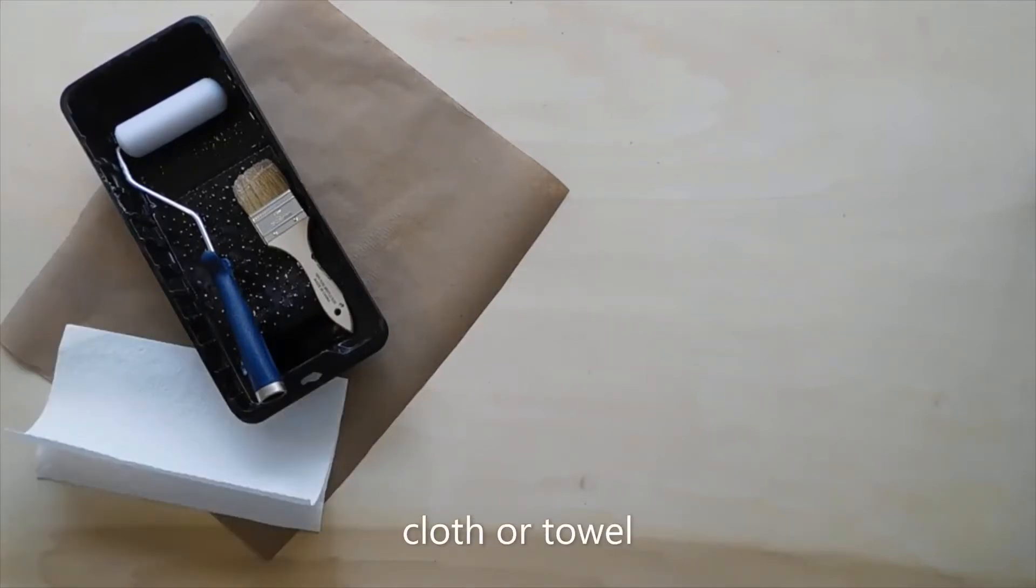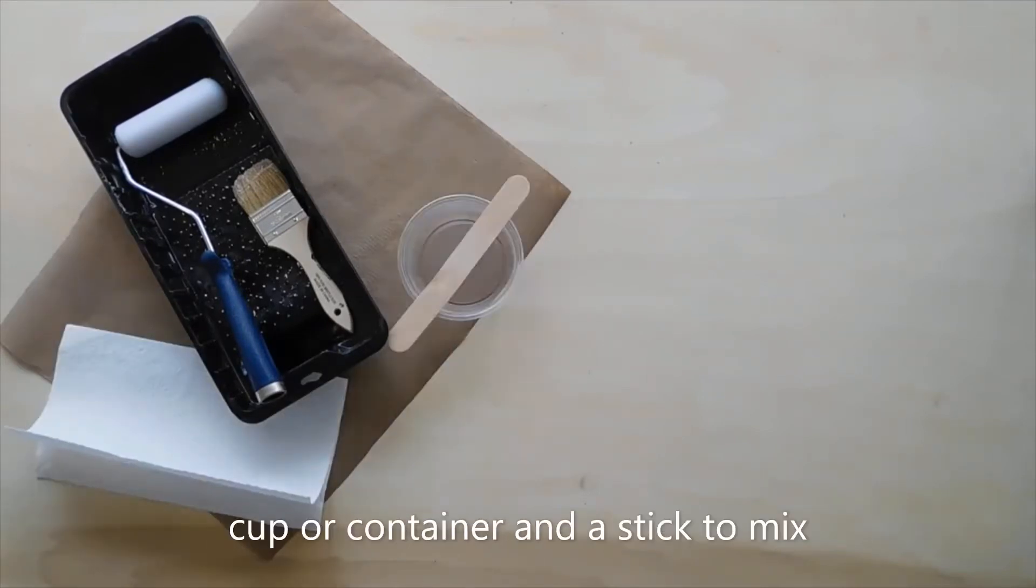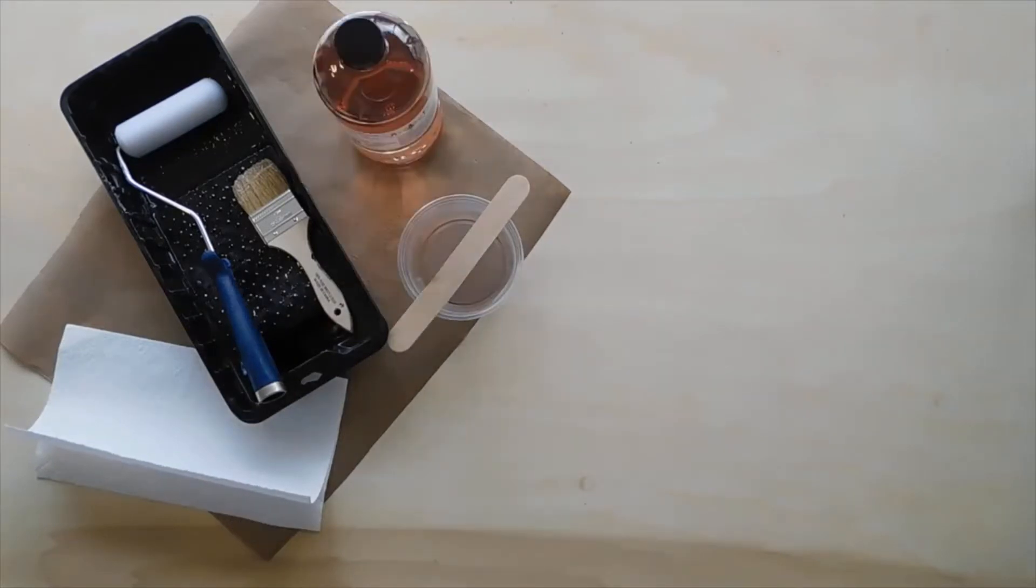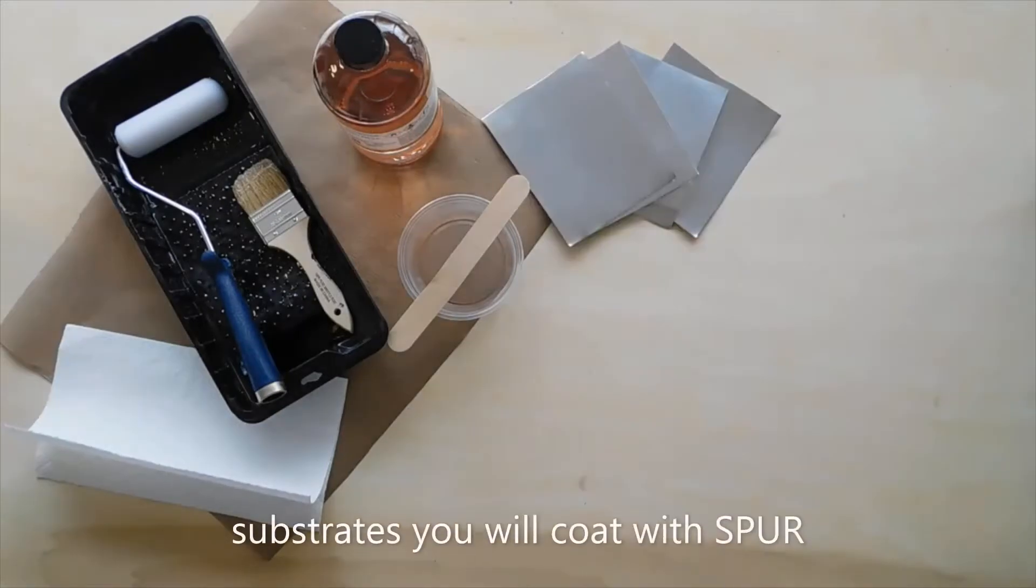You'll also need a cloth or towel to clean the substrates you will bond, a cup or container, a stick to mix, spur adhesive, and the substrate you will coat spur onto. In this case I will bond to some aluminum.